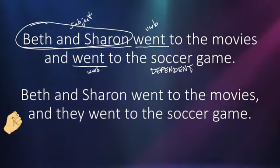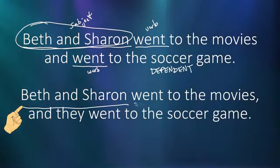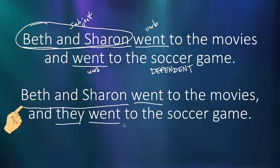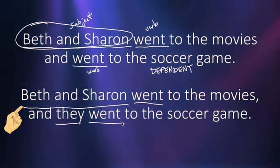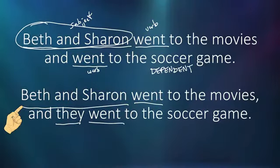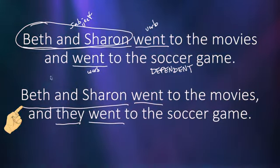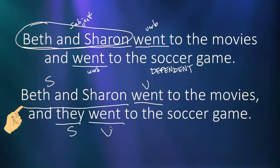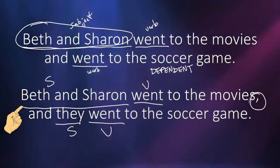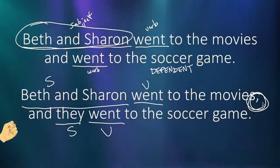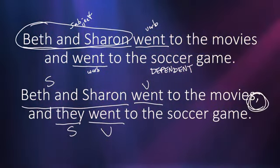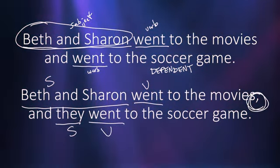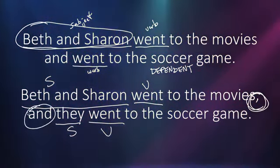In the second example, we have 'Beth and Sharon went to the movies.' And this time, 'and they' — subject — 'went to the soccer game.' We have two sentences, if you will, two independent clauses, because there's a subject and a verb, and a subject and a verb. And that's why we put the comma in front of the word 'and.' You must have a comma in front of the word 'and' anytime you have a subject and verb followed by another subject and verb and the word 'and.'